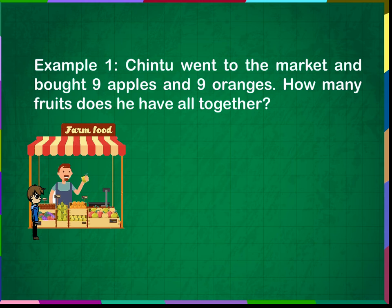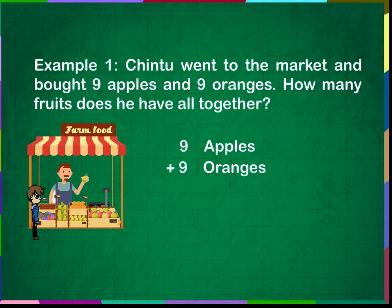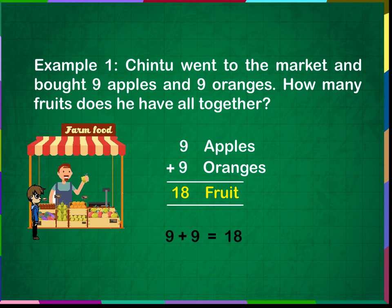Example 1: Chintu went to the market and bought nine apples and nine oranges. How many fruits does he have altogether? Nine apples and nine oranges make eighteen fruits. Nine plus nine is equal to eighteen. Chintu has eighteen fruits altogether.